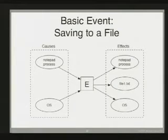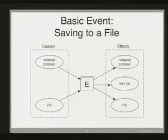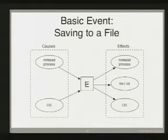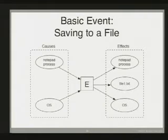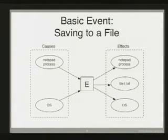Here's a visual example: a notepad process running in memory, with an operating system also in memory. We have a buffer in the notepad process and we want to save what we're typing to a file. The effect of this event: the notepad process is in a new state with changed instruction pointer and other things; a new file1.txt is created on disk that didn't exist before; and there's a file descriptor or data structure in the operating system that has now changed state because of this event.